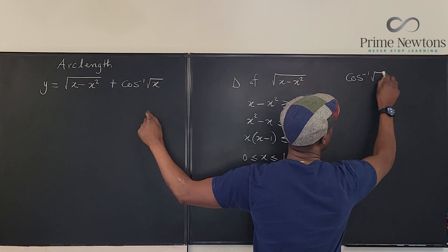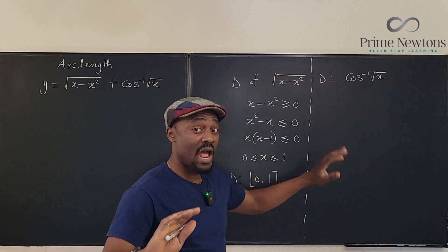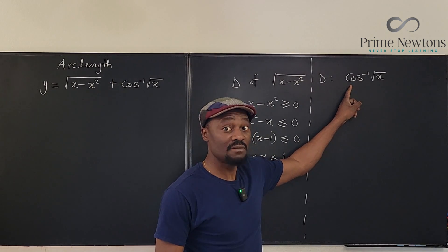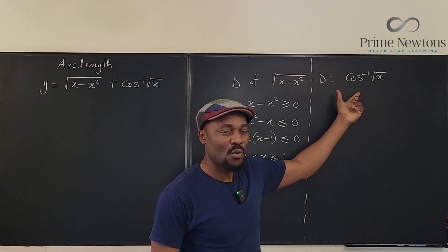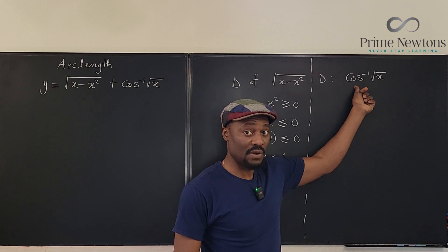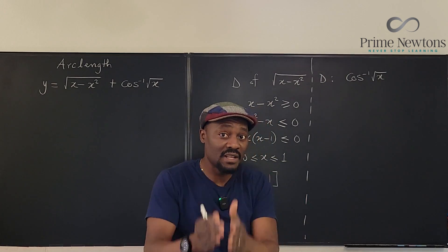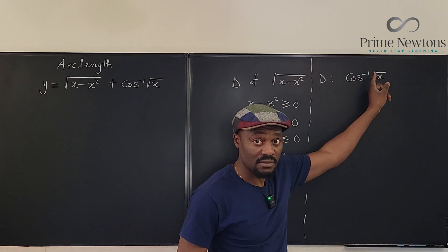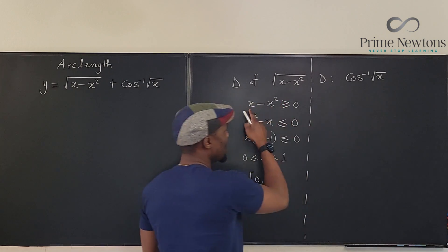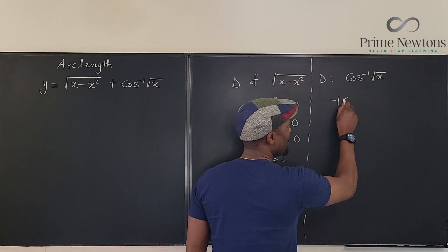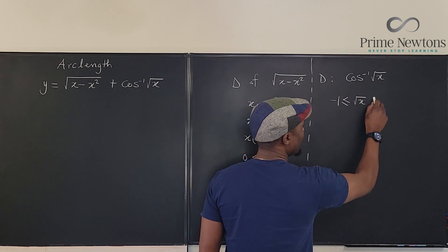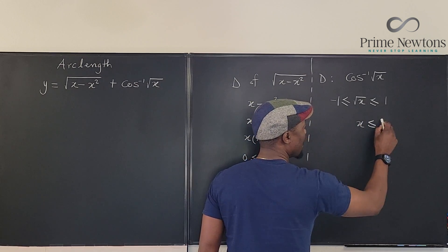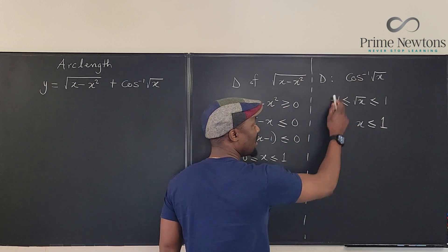What is the domain of cosine inverse of the square root of x? Here the main function is the inverse cosine. The domain of inverse cosine — whatever you feed into it — has to be from negative 1 to 1. So the square root of x has to be between negative 1 and 1. That means negative 1 ≤ √x ≤ 1. When we square: the left side becomes 0 and the right side becomes 1.